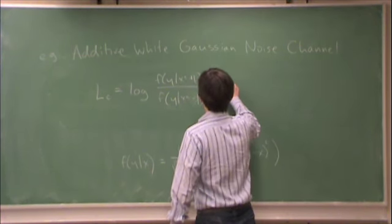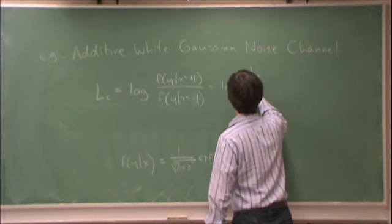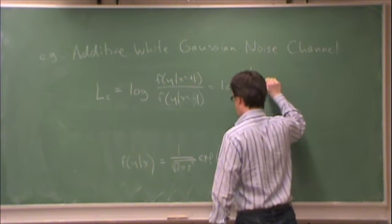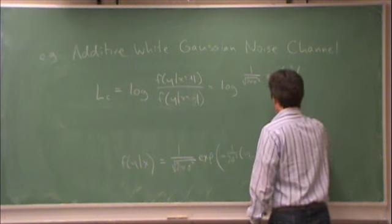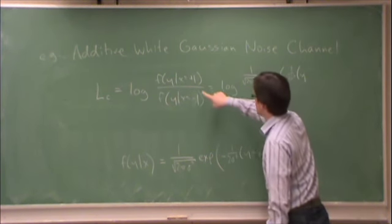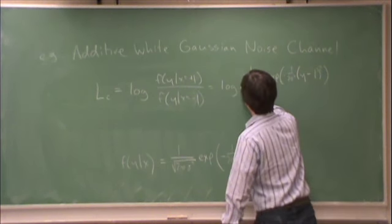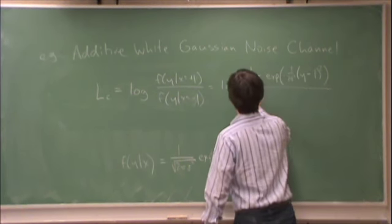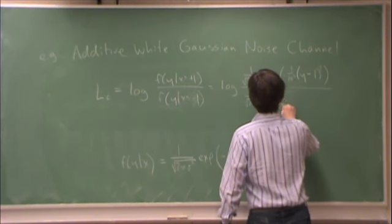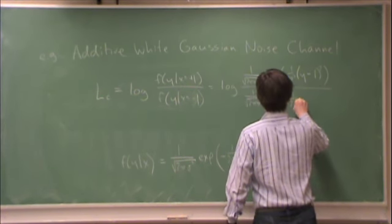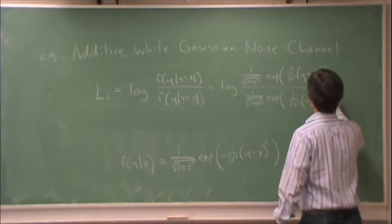This is log, in the numerator, 1 over root 2 pi sigma squared, e to minus 1 over 2 sigma squared, y minus plus 1, so that's y minus 1 squared, over 1 over root 2 pi sigma squared, e to minus 1 over 2 sigma squared, y minus minus 1, which is y plus 1 squared.